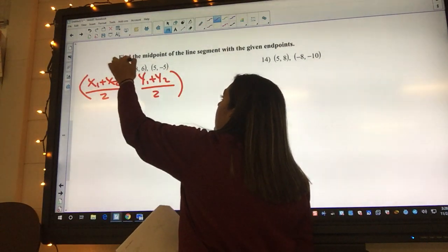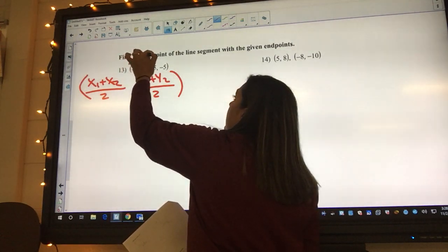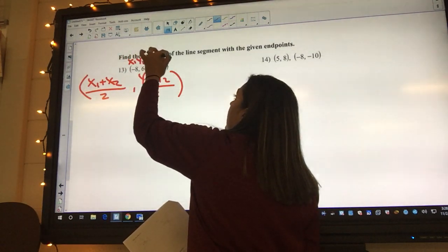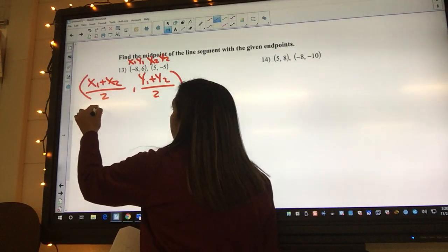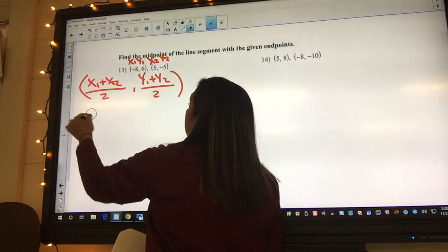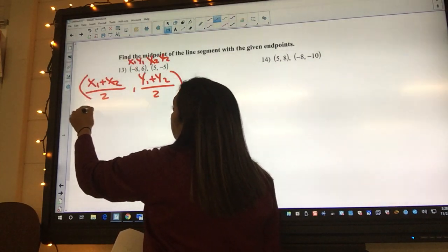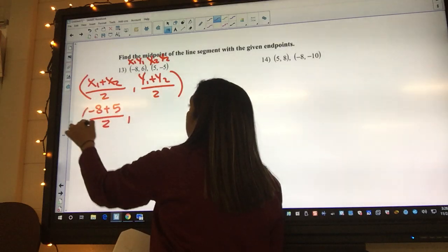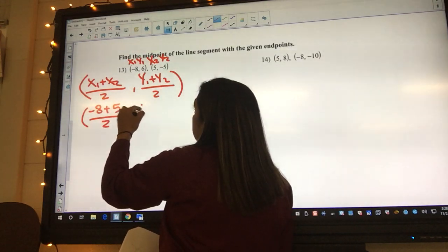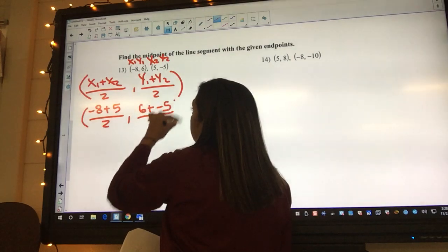We can go ahead and label x5, y sub 1, and then it's just a matter of plugging in. So it's going to be 5 according to my formula, and negative 8 plus 5 over 2, and then y1 is 6 plus negative 5 over 2.